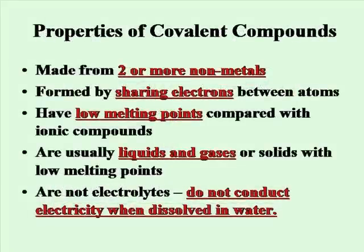Covalent compounds are made from two or more nonmetal elements. They are formed by sharing these electrons. They have low melting points, especially compared with ionic compounds, which means they're usually liquids or gases at room temperature with very low melting points. And they're not electrolytes. They don't conduct electricity when dissolved in water.